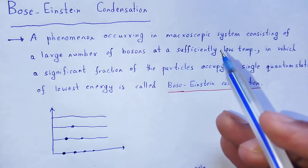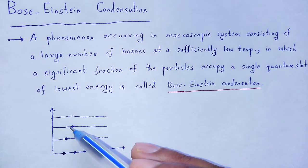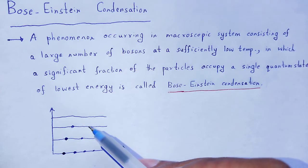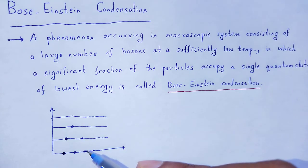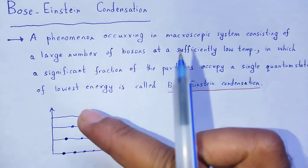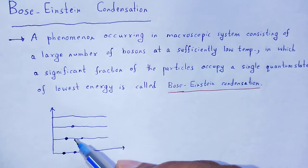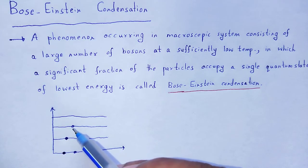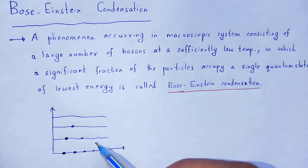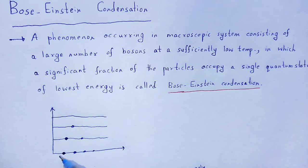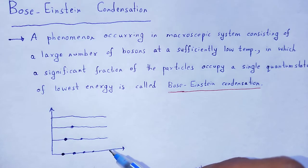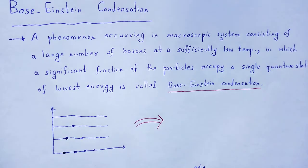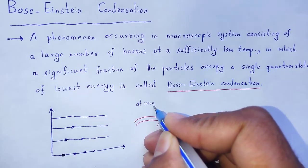At a sufficiently low temperature, what happens? A significant fraction of the particles occupy a single quantum state — that quantum state of lowest energy. At very, very low temperature, these bosons move towards the ground state. Suddenly, the population in that ground state increases, and the energy level diagram is now transformed at very low temperature.